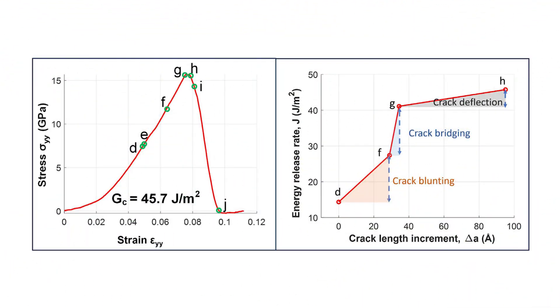So monolayer amorphous carbon has random bonding configurations. But interestingly, a small fraction of it is still crystalline, forming tiny islands embedded in that amorphous matrix. That's such a critical point.